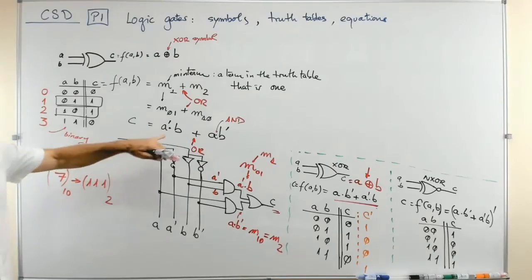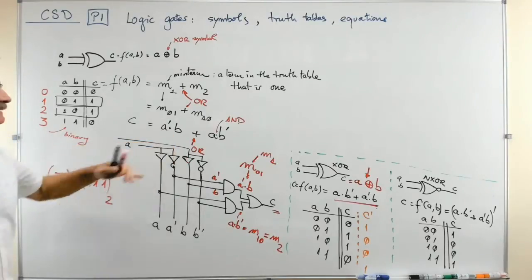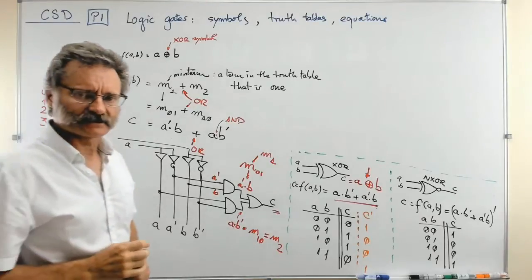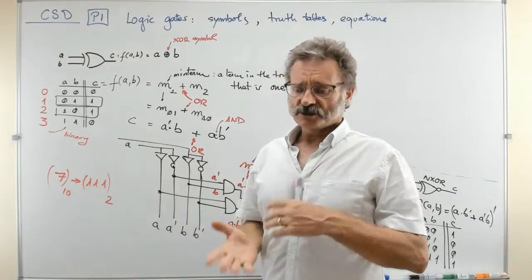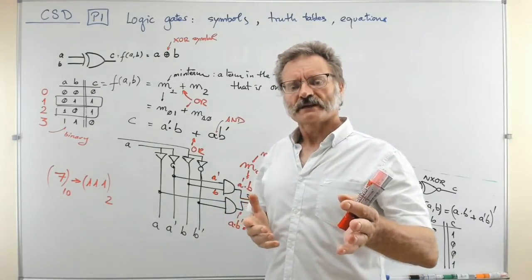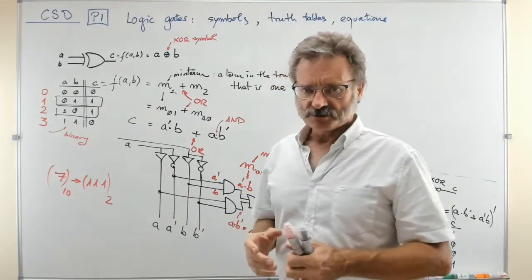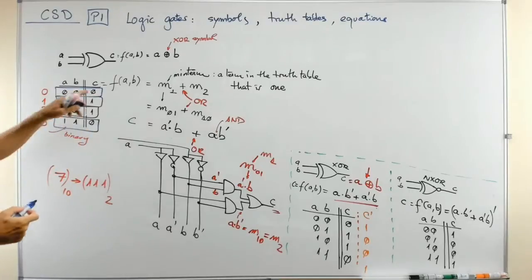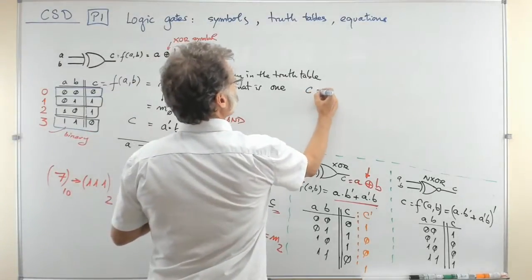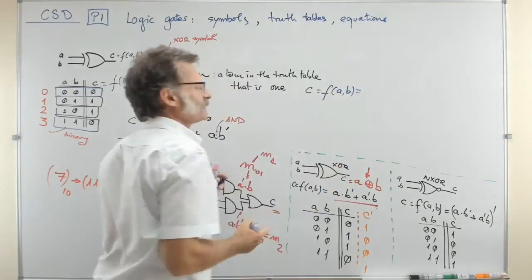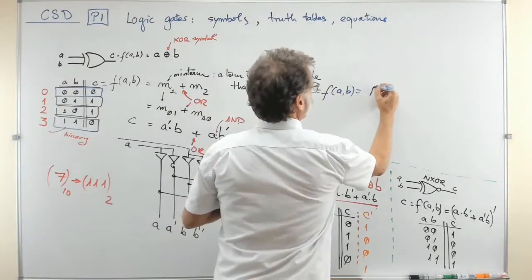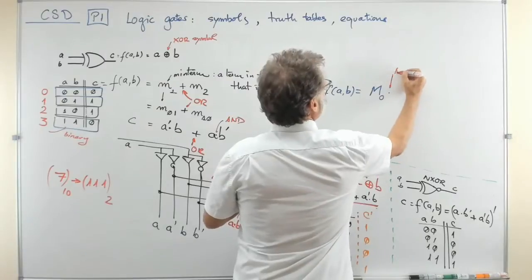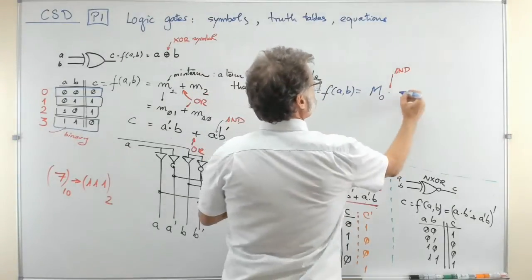Considering the typical equation, we have the OR of two terms — the ones which are generating a 1 in the truth table. In the same way, you can do something equivalent by considering the zeros. If you take the zeros, what you are taking from the table is term 0 and term 3. So the same function C of variables A and B is nothing but a product — you can consider the product of maxterm 0 and maxterm 3.